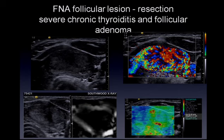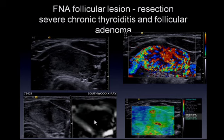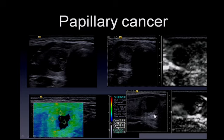This follicular lesion turned out on FNA and resection to be severe chronic thyroiditis and a benign follicular adenoma. The lesion is just minimally hypoechoic to normal thyroid, slightly heterogeneous, and incredibly vascular on color Doppler. On strain imaging, there is a softer component and a harder component. On shear wave imaging, velocities are approximately 6 meters per second, more suggestive of a malignant lesion than a benign lesion—which it turned out to be.